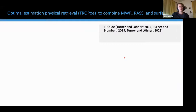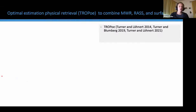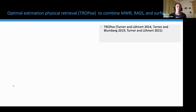A key component of my study was using the optimal estimation physical retrieval called TROP-OE to retrieve temperature profiles from remote sensing instruments. TROP-OE is based on a retrieval algorithm called AERI-OE, first developed for data from the AERI system, a passive infrared spectrometer. Over the years, it was further developed to include data from other instruments. The retrieval allows combining data from various instruments — in my case, I combined data from a microwave radiometer, a Radio-Acoustic Sounding System (RASS), and a surface station.